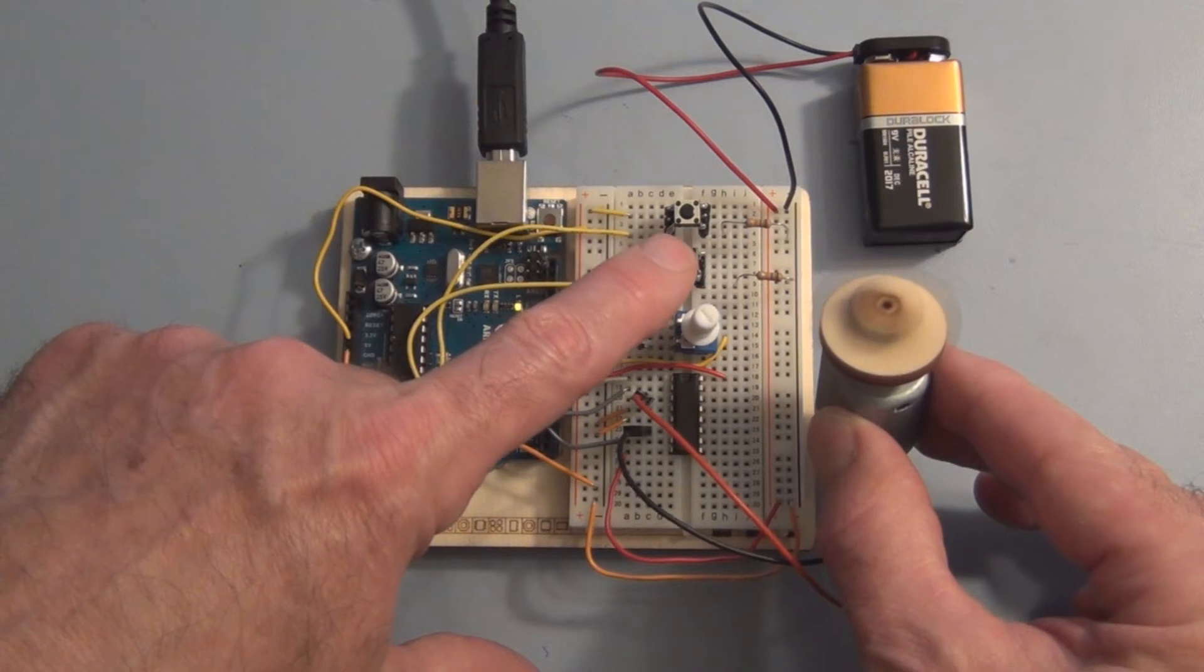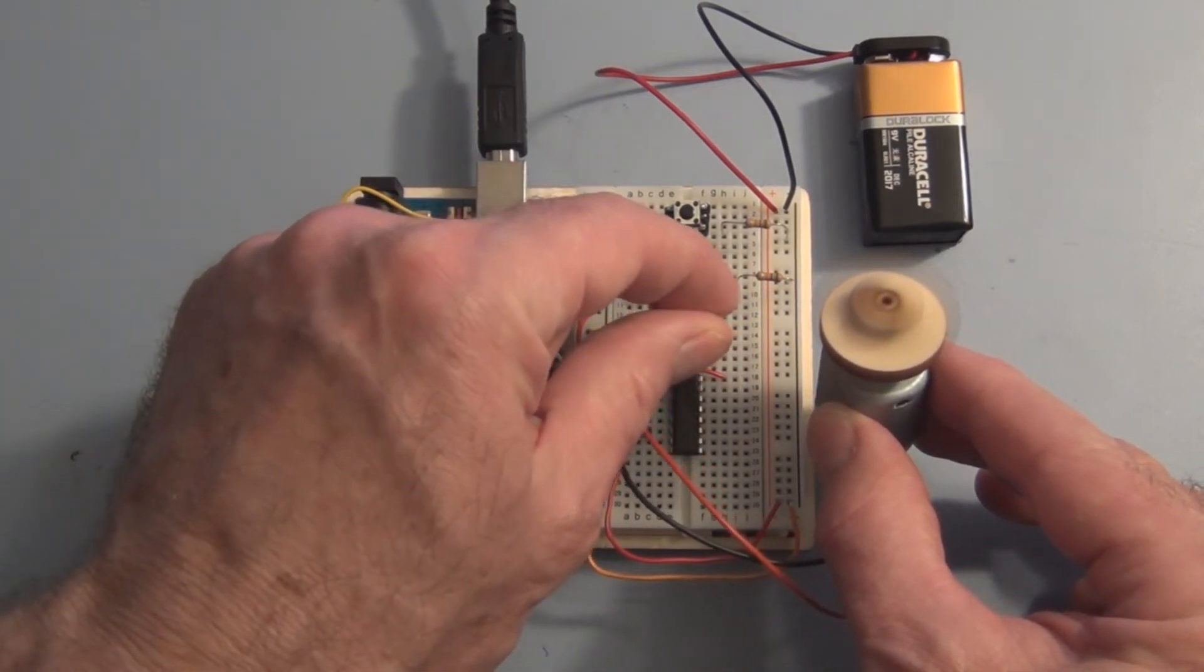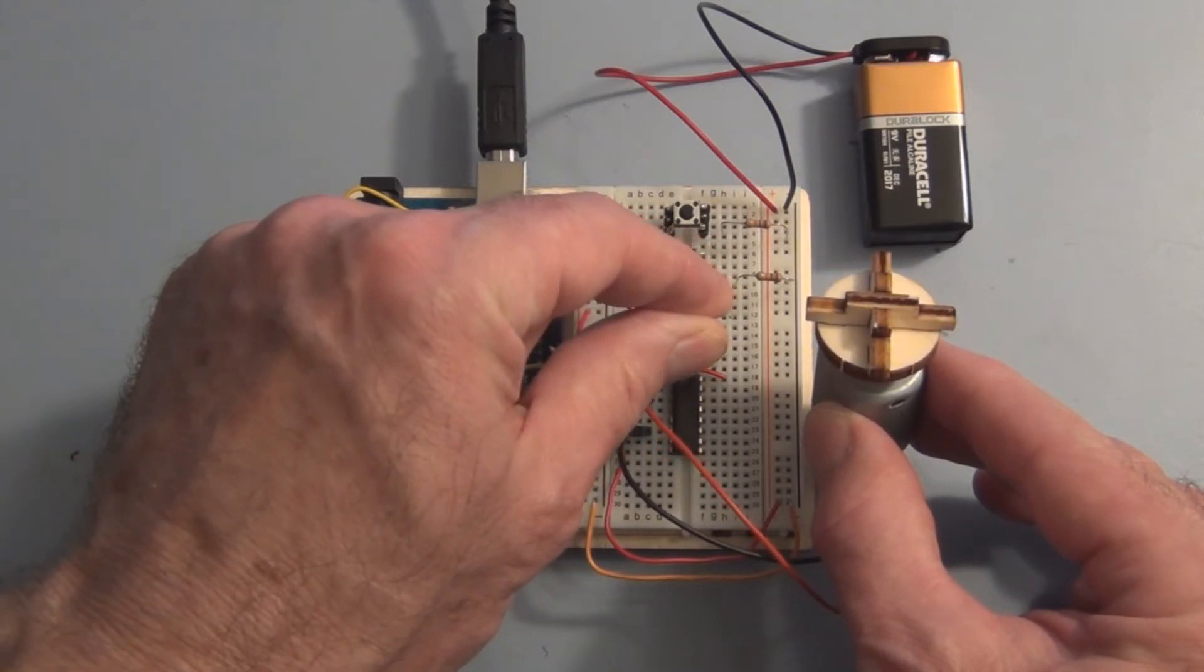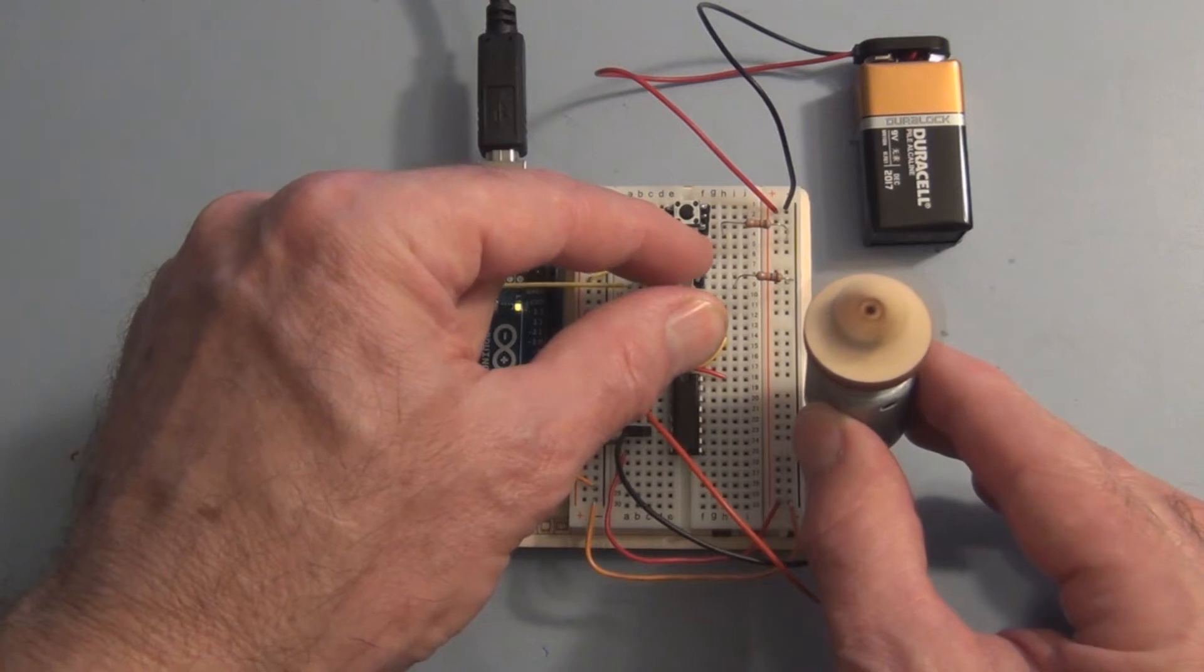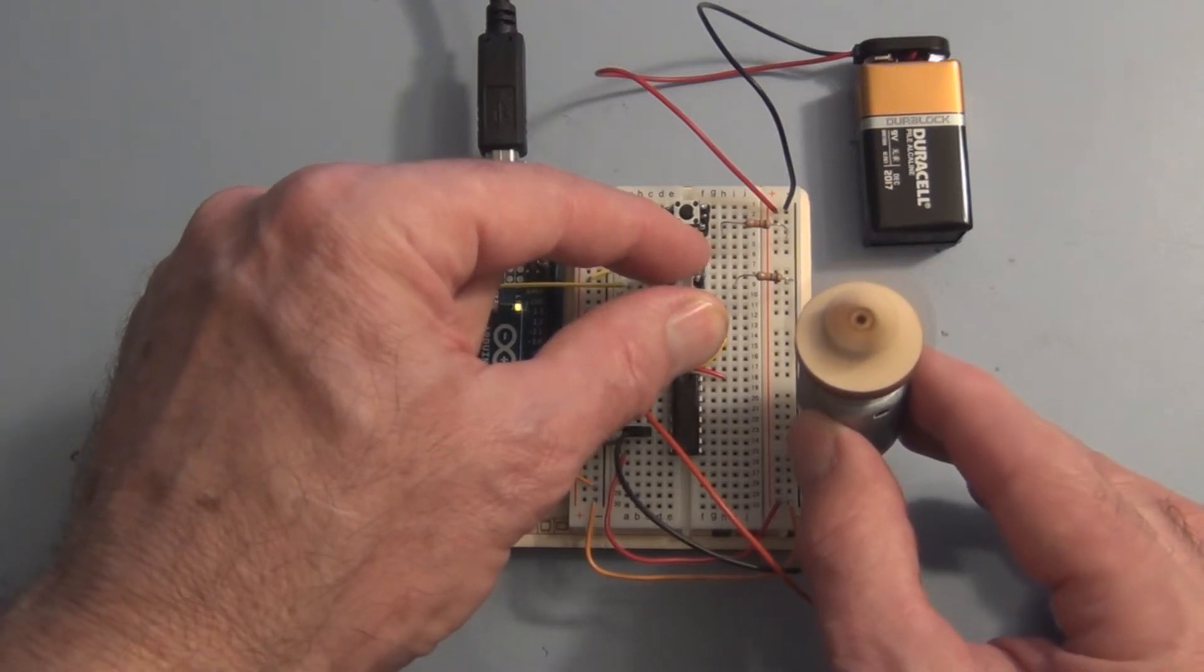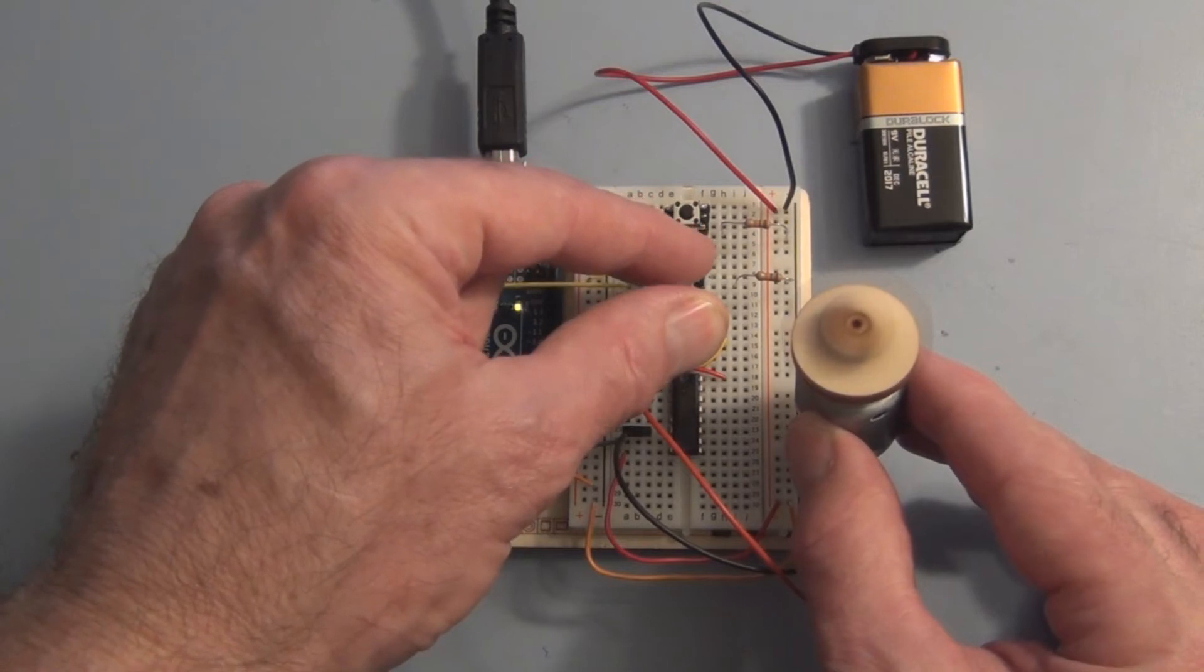And here, this is the button that changes direction. Slow this down. I can control the speed. It's a little touchy. It doesn't seat in the breadboard properly. I press this button, you can see it turn direction.